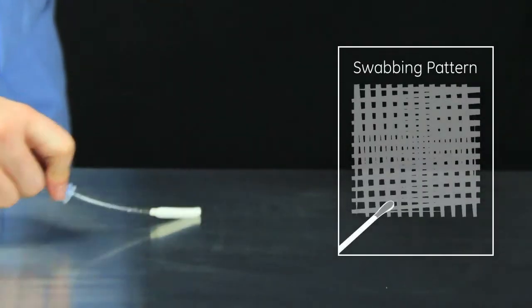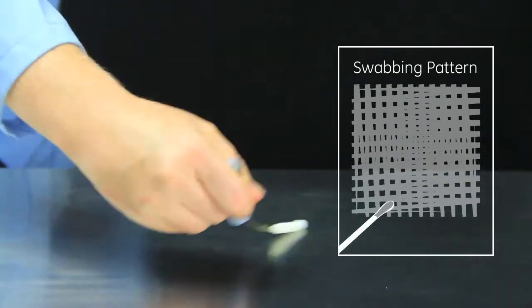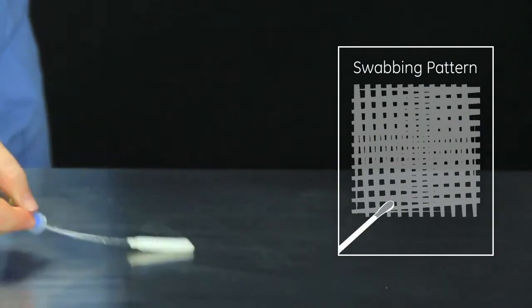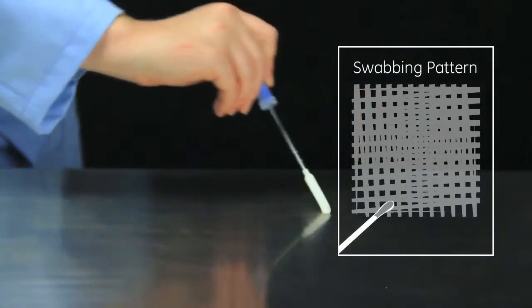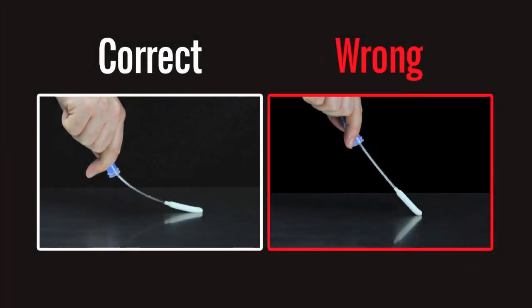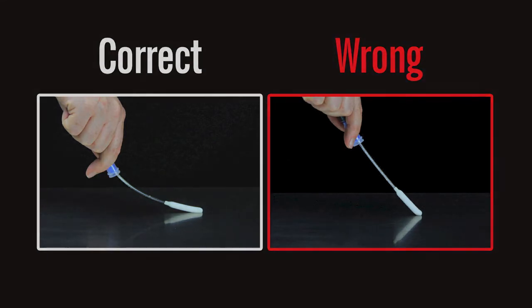Swab a 4x4 inch or 10x10 cm square area in a criss-cross pattern, swabbing the area with even coverage. Apply sufficient pressure to create flex in the swab shaft. This maximizes sample collection and improves accuracy of test results.